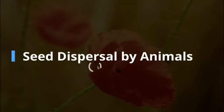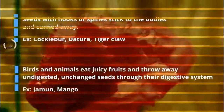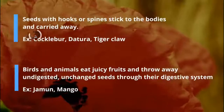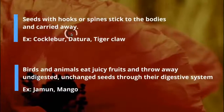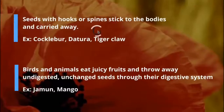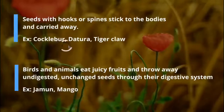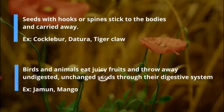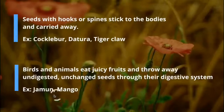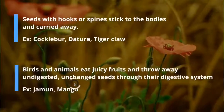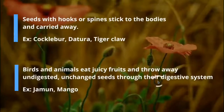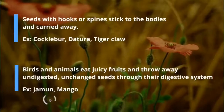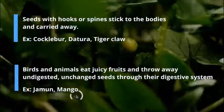Seed dispersal by animals: some seeds have hooks or spines that get stuck to the bodies of animals and get carried away to other places. Birds and animals also eat juicy fruits and throw away the undigested seeds through their digestive system. Examples include jamun, mango, and cherry.